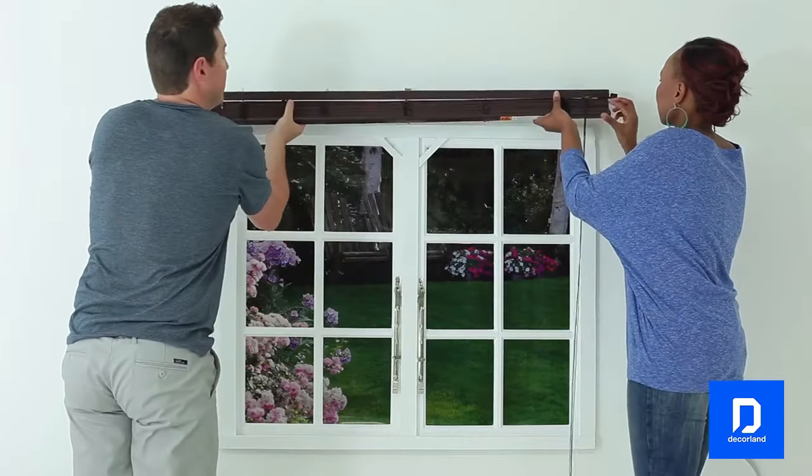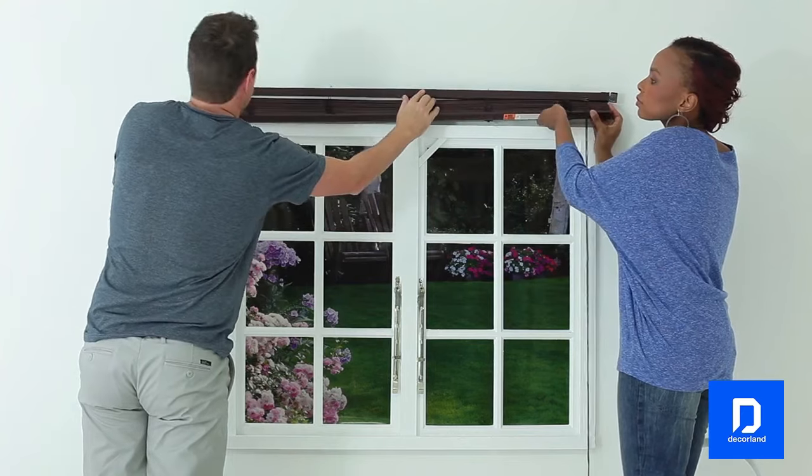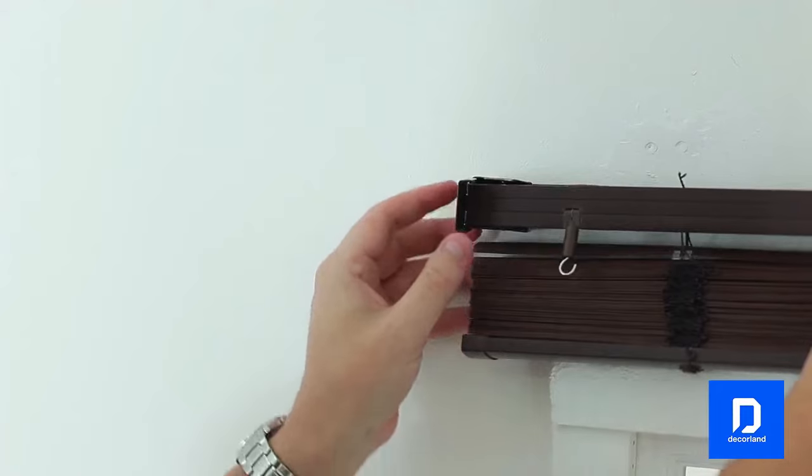Lift the blind with the tilting wand and cords facing towards you and place the headrail into the open brackets. Then close the brackets to secure the blind in place.